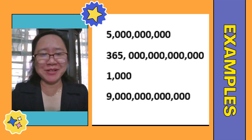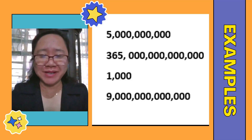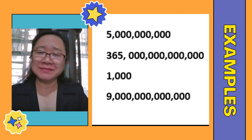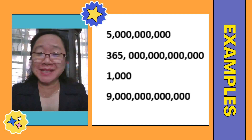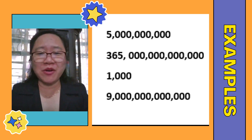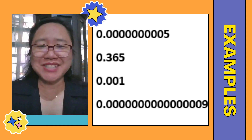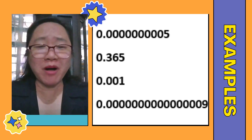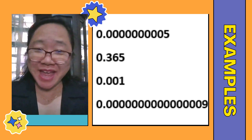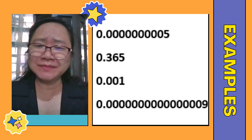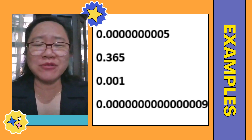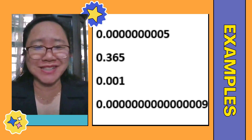These are examples of big numbers. Do you know how to read them? It's hard, right? Because of those series of zeros. These are also examples of small numbers. Can you read them? It's also quite hard because of those long chains of zeros.